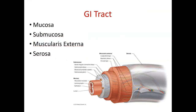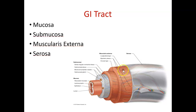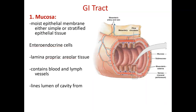The GI tract has four tunics or layers. The mucosa is the innermost layer, coming in direct contact with food and surrounding the lumen. Below that is the submucosa. Then we have smooth muscle — the muscularis. And on the outside is the serosa, which anchors it to surrounding structures.